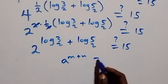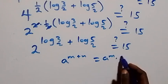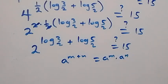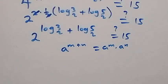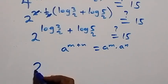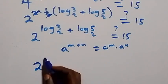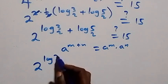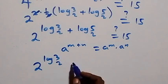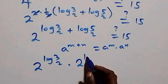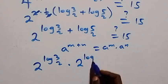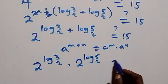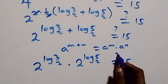This gives us 2 raised to power log 3 base 2, times 2 raised to power log 5 base 2. And is this equals to 15?